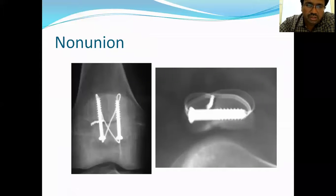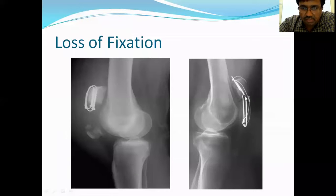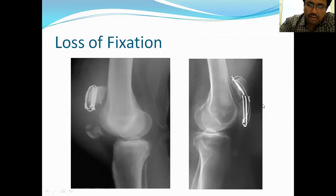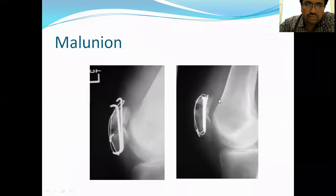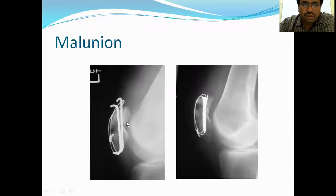Non-union is very rare since it is a small bone. Loss of fixation occurs when K-wires and stainless steel wires break through — the hardware breaks, called loss of fixation. Malunion means the fracture unites in a deformed position — there is a step at the articular surface and the fracture is united in a displaced position; this is called malunited fracture.